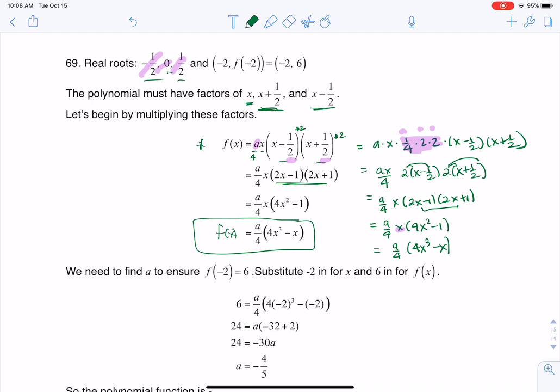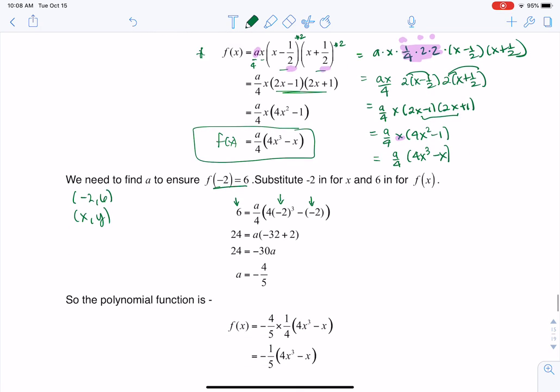Now to figure out my stretch factor of a, I just need to use that ordered pair that we have, negative 2, 6. And again, this is an ordered pair x comma y, so I'm going to plug in negative 2 for x, and I'm going to plug in 6 for y. And when I solve that out, you can see me doing a little arithmetic there, and I get a equaling negative 4 fifths.